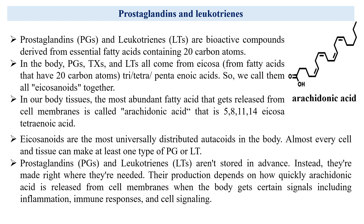Prostaglandins and leukotrienes are not stored beforehand; instead, our body makes them right on the spot when needed. The speed of making them depends on how quickly arachidonic acid is released from the cell walls, especially when our body sends signals during inflammation, immune responses, and cell signaling. In simple words, these eicosanoids are quick helpers made exactly where and when our body needs them.